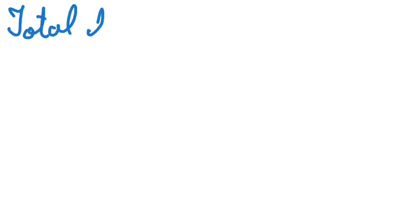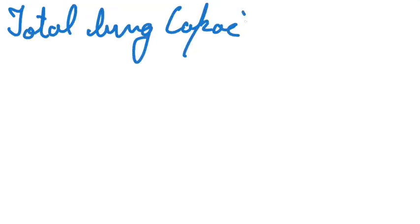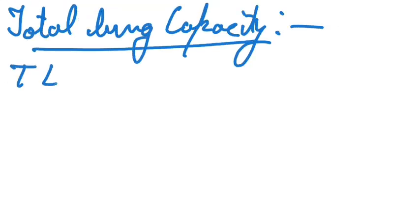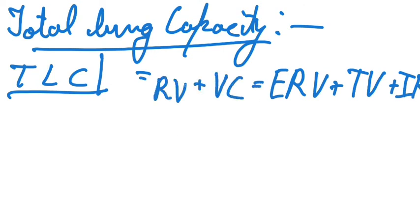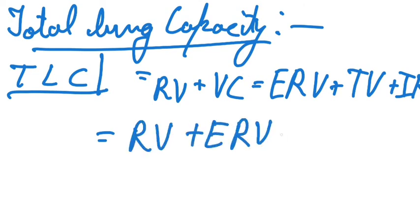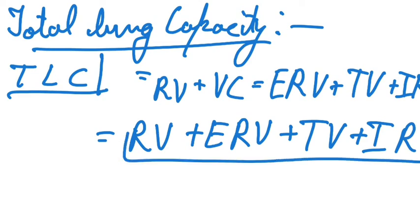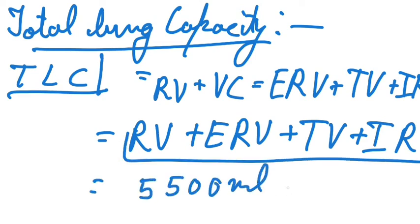Next we have total lung capacity, which is the total capacity of the lungs — how much air a lung can hold. This includes expiratory reserve volume, tidal volume, inspiratory reserve volume, plus residual volume, or equivalently vital capacity plus residual volume. By adding all these, we get an average of 5500 ml, which is the total lung capacity of an average human being.